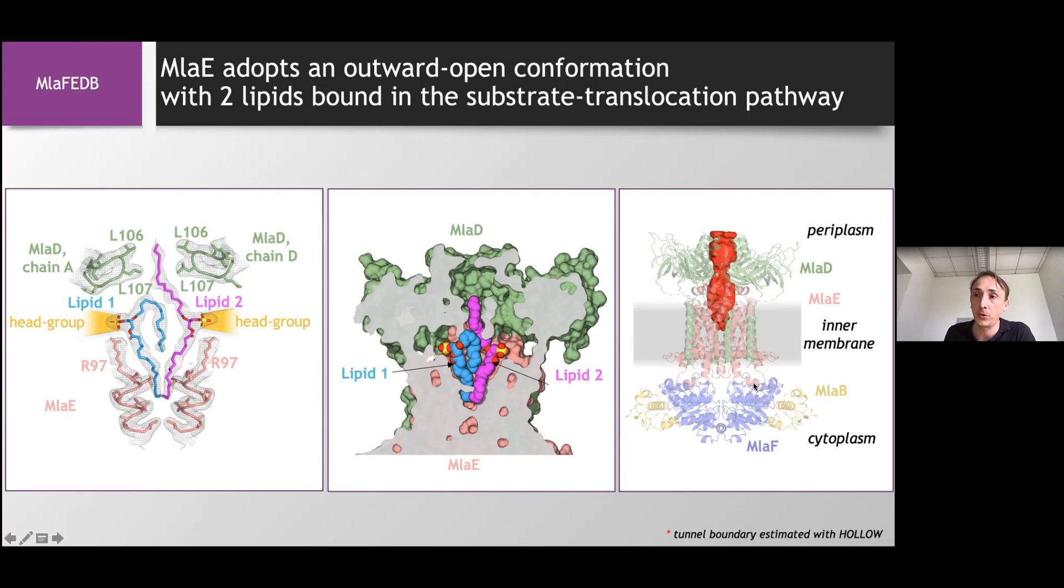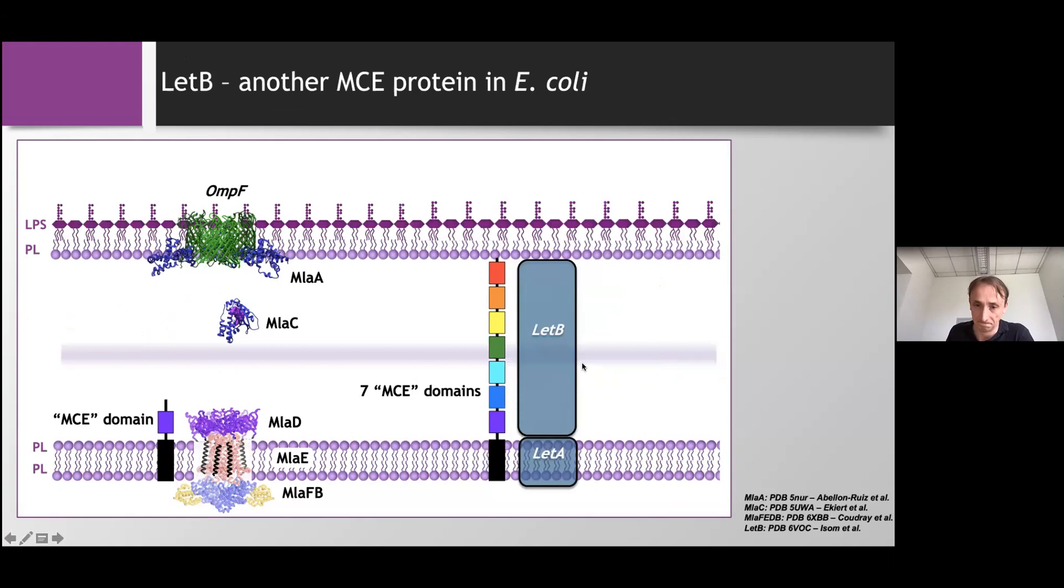But as I mentioned, when we look in E. coli, there are other proteins with MCE domain. And the second one I'm going to talk about is called LetB. And what's unique about LetB, it's that it doesn't have one but seven MCE domains. And the same, so we use cryo-EM to solve the structure. We also deleted the transmembrane helix from the operon and just concentrated on resolving the structure of the seven soluble MCE domains.